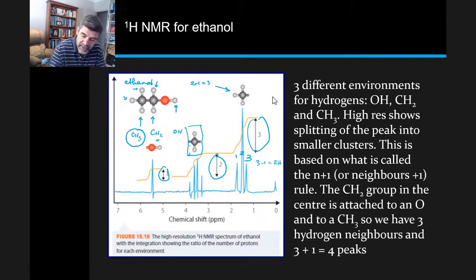So there are three hydrogens attached here, and therefore with our n plus one rule, three plus one is four. Then we have in this region here, four of these little peaks.